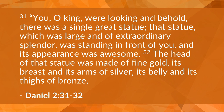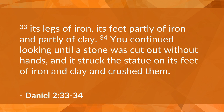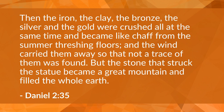Daniel describes the dream to the king: 'You O king were looking, and behold there was a single great statue of extraordinary splendor standing before you. The head was made of fine gold; its breast and arms of silver; its belly and thighs of bronze; its legs of iron; its feet partly of iron and partly of clay. A stone was cut out without hands and struck the statue on its feet of iron and clay and crushed them. The iron, clay, bronze, silver, and gold were crushed and became like chaff, blown away so not a trace was found. The stone became a great mountain and covered the whole earth.'